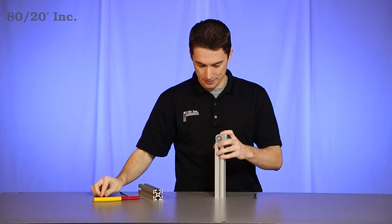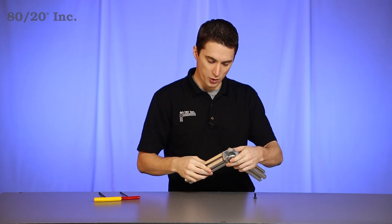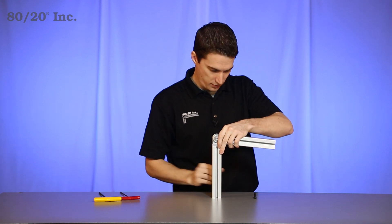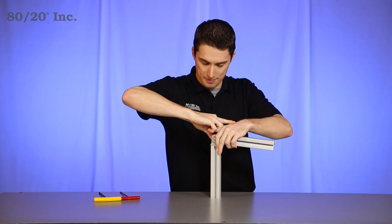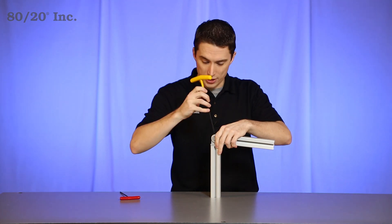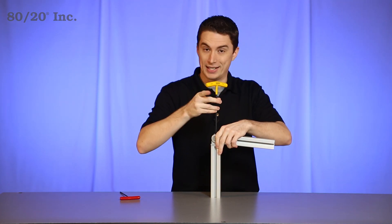Once you have that locked into place, you'll take your other bar and repeat the process. Put the pivot joint right over the end tap. Take your bolt and feed it into the end tap. From there, we'll take our wrench and finish off the pivot joint by tightening it down.